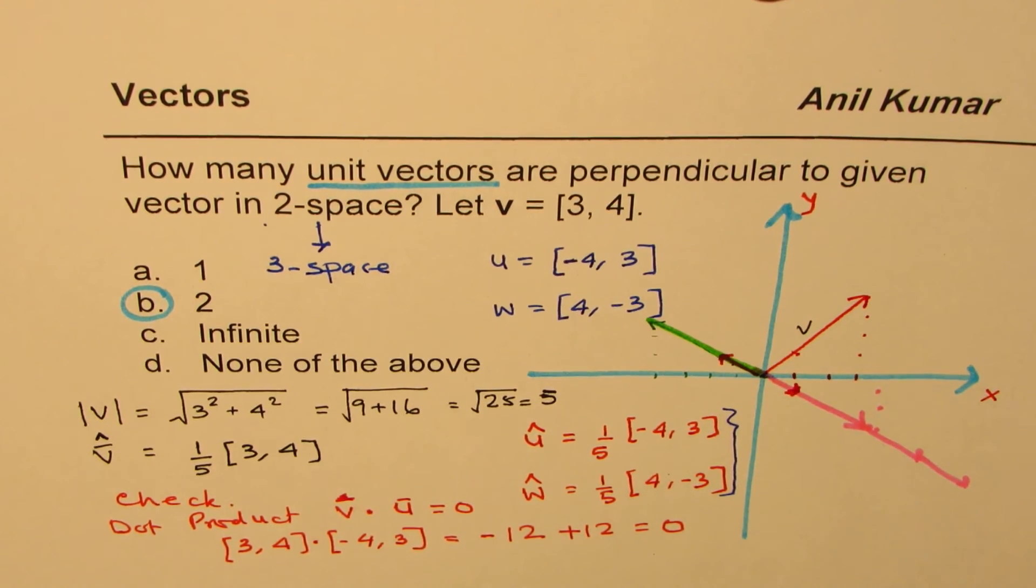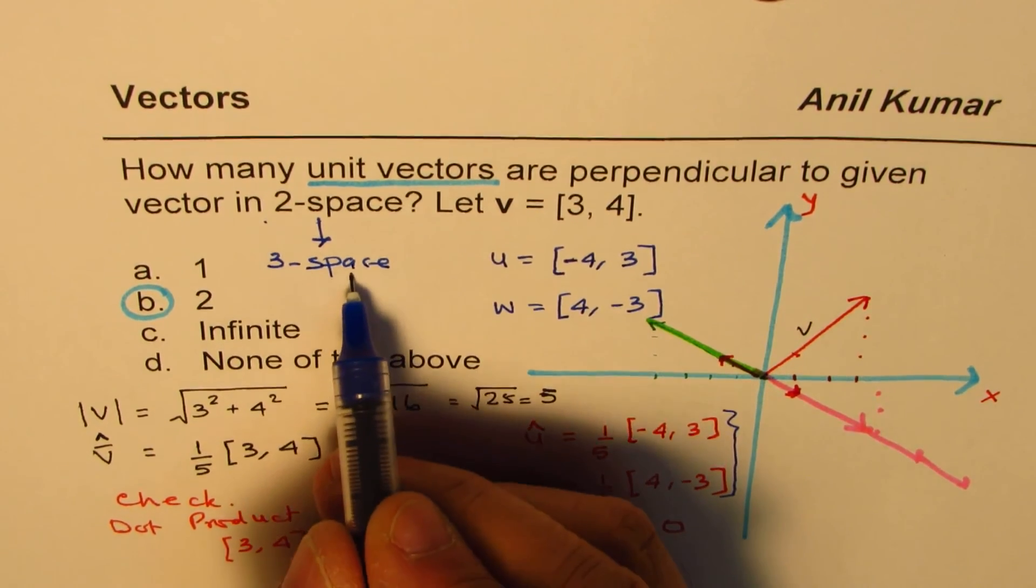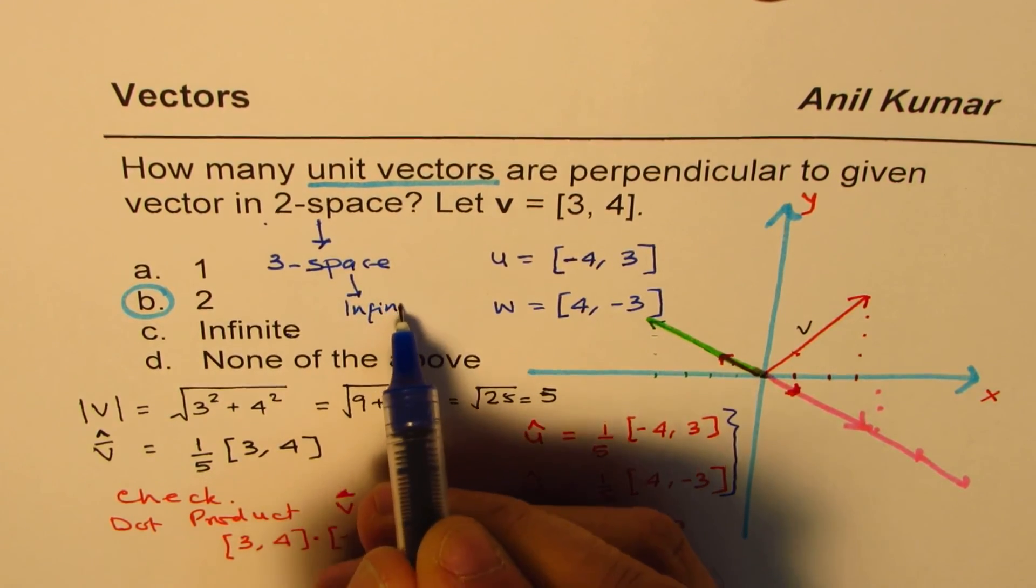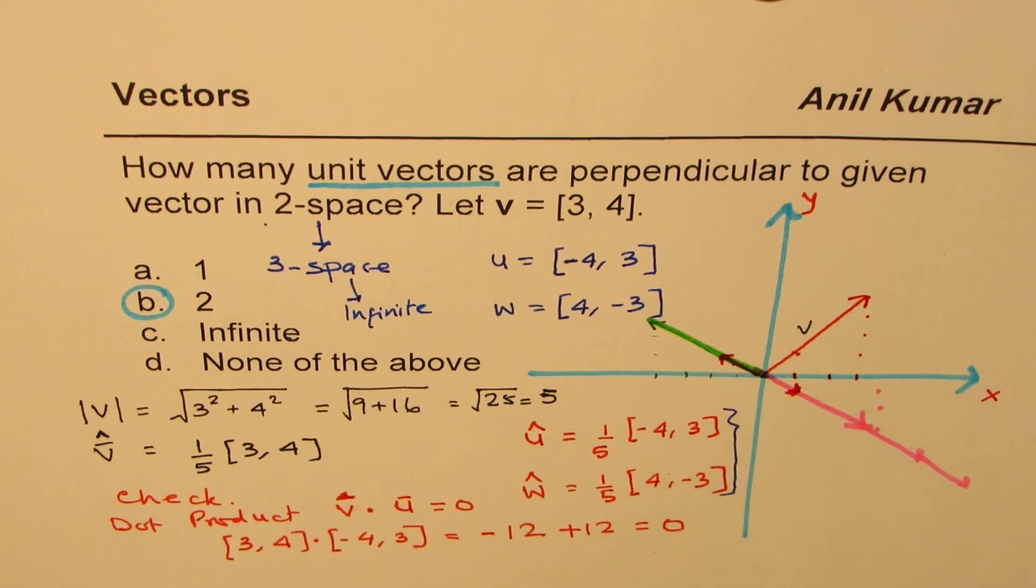They will be infinite because these vectors could be pointing out of the paper also, that is, R3. So in 3-space, the answer would change to C, infinite. But in 2-space, the answer is 2.